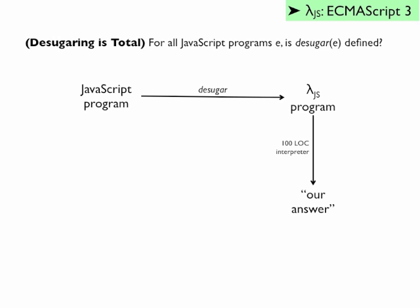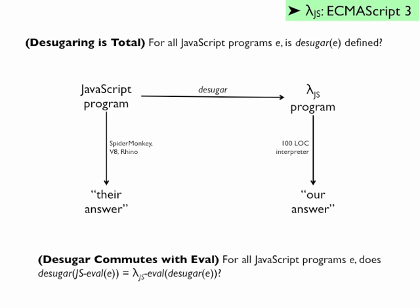Unfortunately, JavaScript has implementations too. So the burden is on us to show that our answer is the same as their answers. That is, does LambdaJS produce the same results as actual JavaScript implementations?